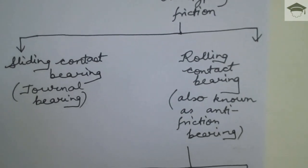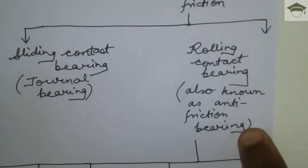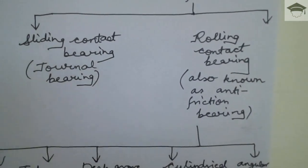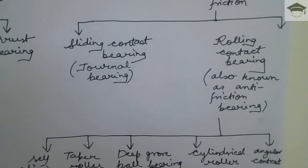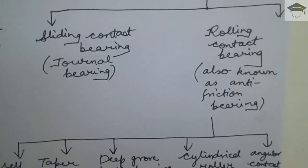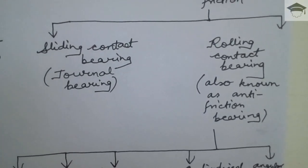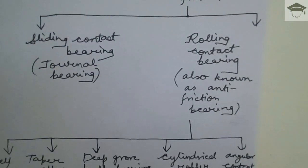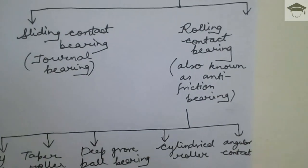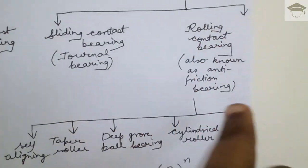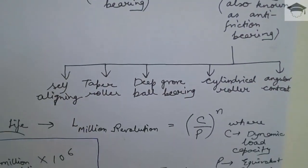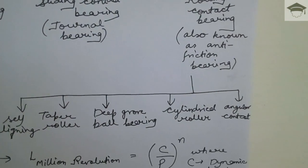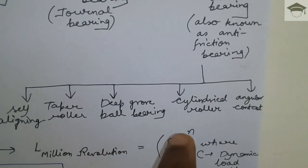The second type is rolling contact bearing, which is also known as anti-friction bearing. This is a very important objective question that can come in an exam. Rolling contact bearing supports the load at point contact — just by rolling — and there is no lubricant friction here.